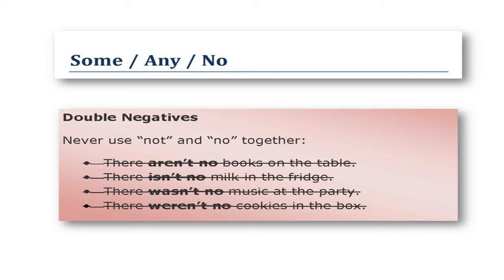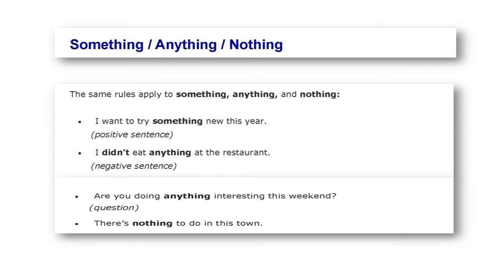Double negatives: never use not and no together. There aren't no books on the table is incorrect. There isn't no milk in the fridge is incorrect. There wasn't no music at the party is incorrect. There weren't no cookies in the box is incorrect.